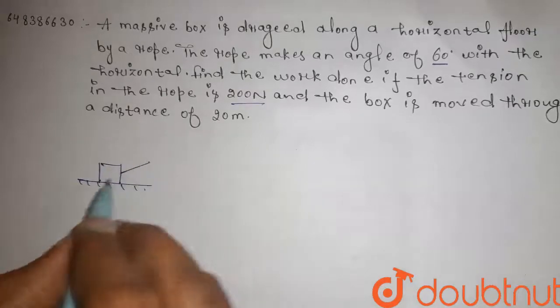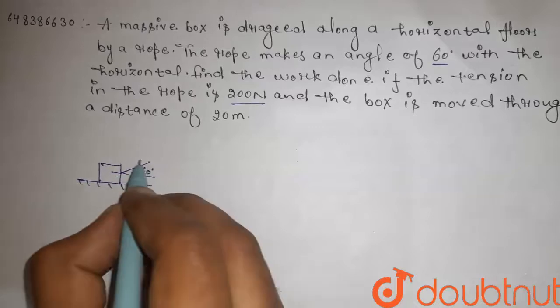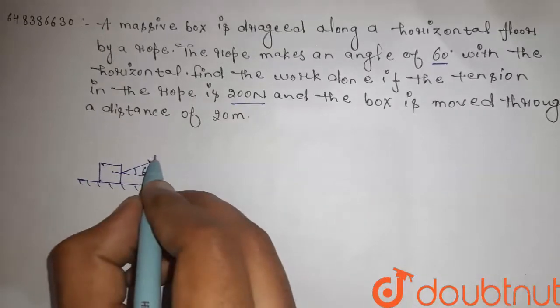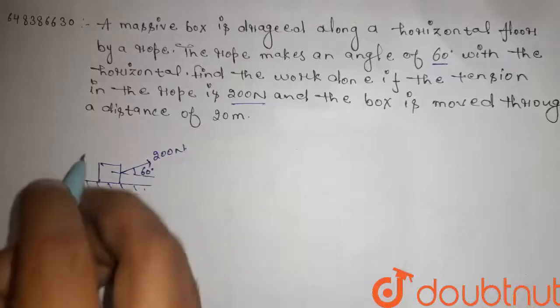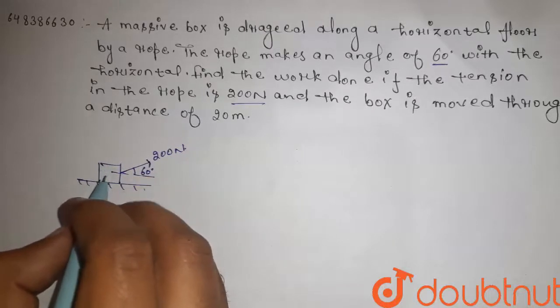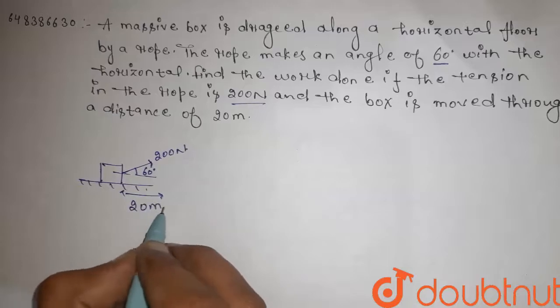dragged with the string, making angle 60 degree with horizontal, and tension in the string is 200 N. Moved by displacement distance 20 meter.